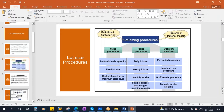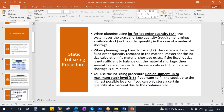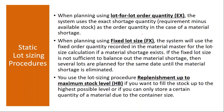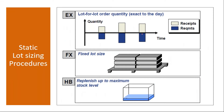First we will start with the static lot sizing procedures. When planning using lot-for-lot order quantity, the system uses the exact shortage quantity as the order quantity in case of a material shortage. In the static lot sizing procedures we have three: EX — lot for lot order quantity, FX — fixed lot size, and HB — replenish up to maximum stock level.